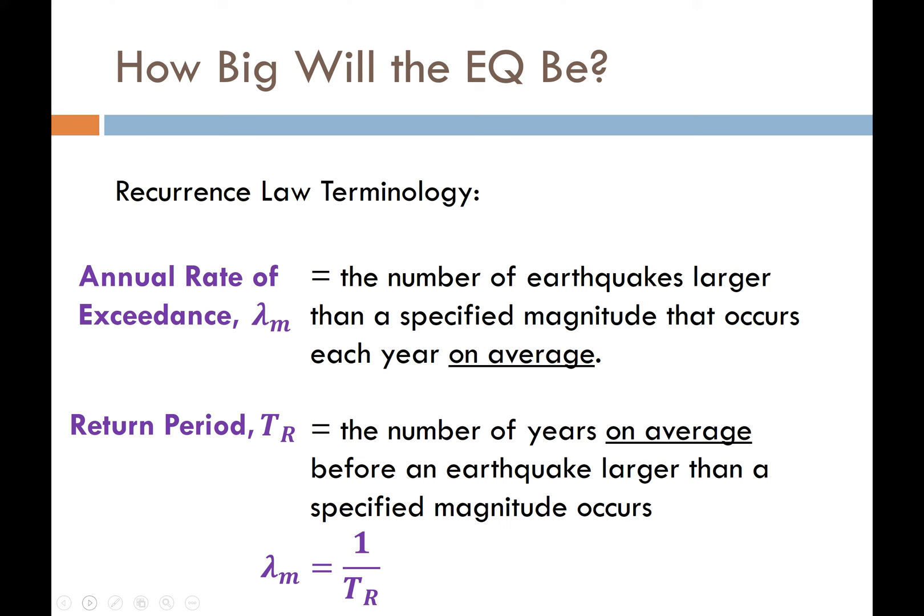Return period is a term we're often more familiar with — we use return periods a lot when talking about floods, like the 20-year flood or the 50-year flood. Those 20 or 50 years are return periods. Similarly, we can ask: what's the return period of exceeding a magnitude 7.0 or 8.0 earthquake? It's the same concept, just a different hazard.